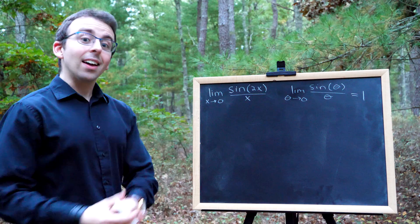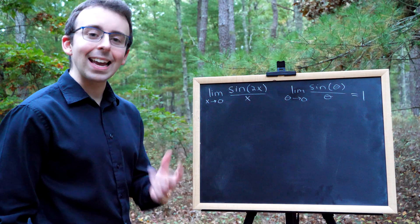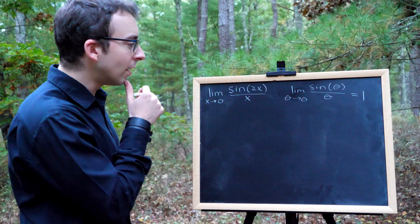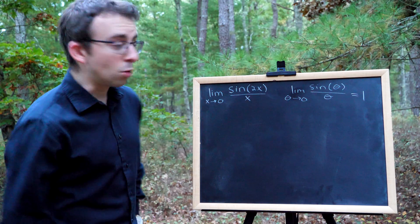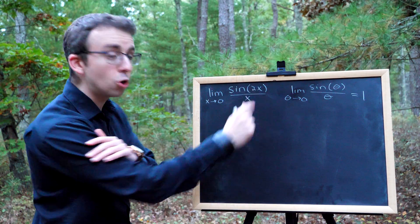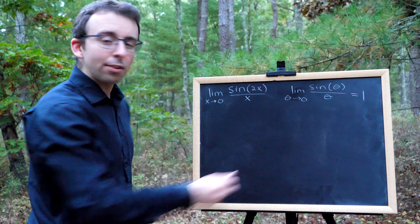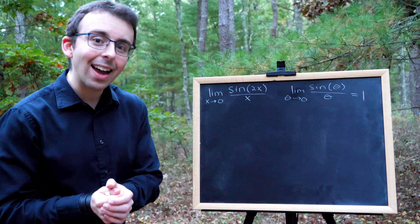You've got to know this limit, and I'll leave a link in the description to my lesson proving it if you are a little skeptical. We want to use this to evaluate this limit. The problem is that we've got 2x in the sine function and x in the denominator. So this rule can't quite be applied yet.